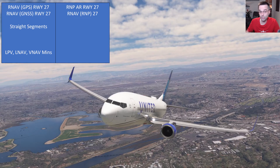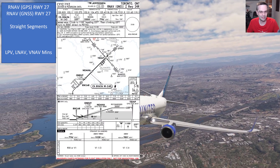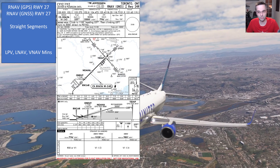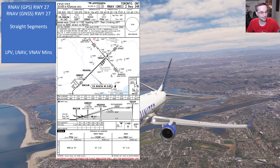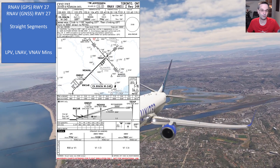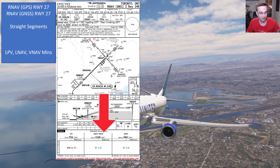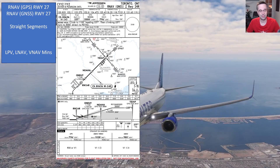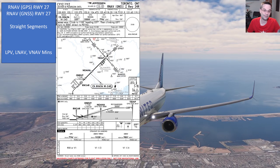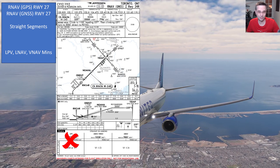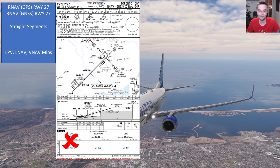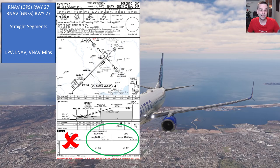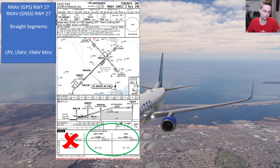An RNAV, GNSS, or GPS approach is basically the same thing, and they're going to always have straight segments between all of the waypoints of the approach procedure, and they'll likely have a couple of different minimums listed on the chart as well — be it for LNAV, LNAV plus VNAV, or LP and LPV approaches, like this approach we're looking at here in Toronto. The first thing to know is that the 737 doesn't have the equipment to fly LP or LPV approaches, so you'll have to fly it either with LNAV or LNAV plus VNAV minimums, depending on what's available for the approach that you're flying.